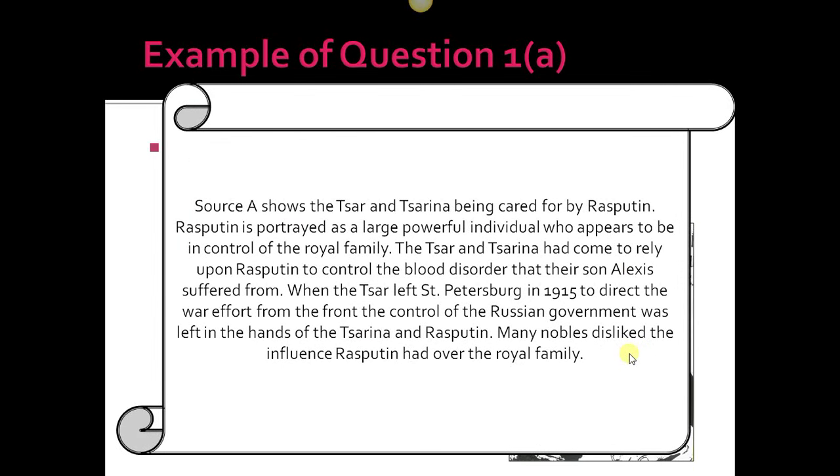The answer given: Source A shows the Tsar and Tsarina being cared for by Rasputin. He's pulled out what he's seeing. Rasputin is portrayed as a large powerful individual who appears to be in control of the royal family. The Tsar and Tsarina had come to rely upon Rasputin to control the blood disorder their son Alexei suffered from. There's nothing in the source that tells us that—that's our knowledge.